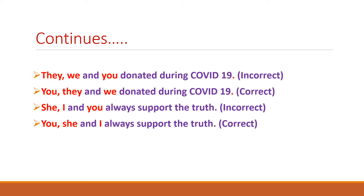Similarly, in the next example: 'she, I and you always support the truth'. Supporting the truth is a good action. Here we find third person, then first person, then second person — but the rule says 231: first second person ('you'), then third person ('she'), and finally first person ('I'). So 'you, she and I always support the truth' is the correct order of pronouns for a good action.